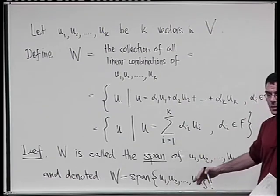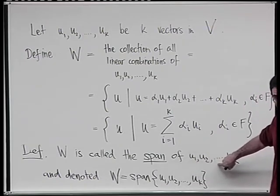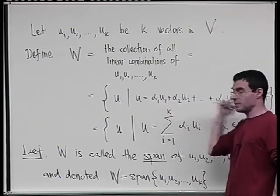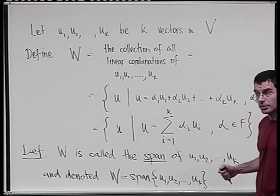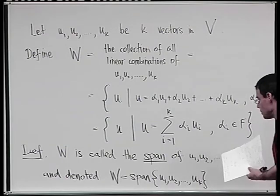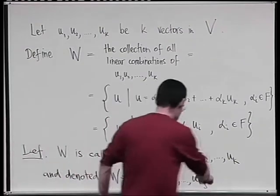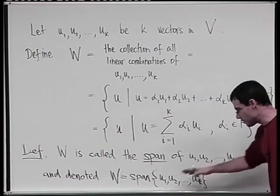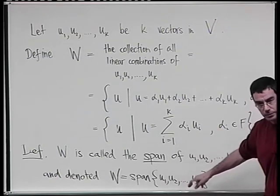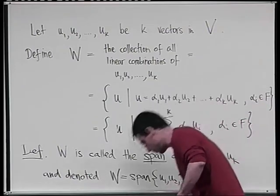W obviously contains all of U1 through UK and contains the minimal stuff needed to be a subspace containing them — all scalar multiples and all sums. The U i's are called a spanning set; they're the set that spans W. Sometimes you'll see them called generators, but I'll use the term spanning set.